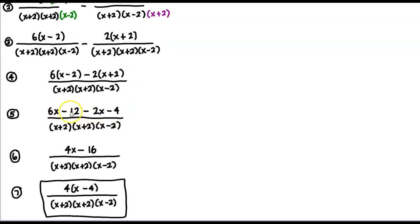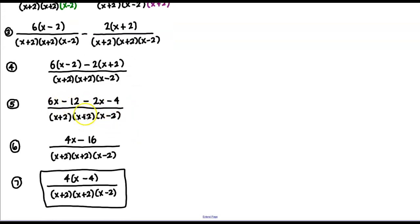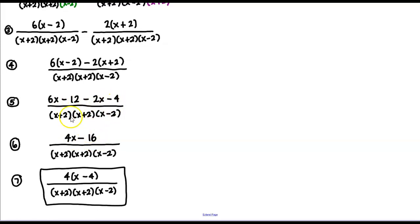Now we combine like terms: 6x minus 2x gives 4x, and minus 12 minus 4 gives minus 16, keeping the same denominator. In step 6, we have one fraction. We check the numerator for factors — we can factor out 4, leaving x minus 4. There's nothing to cancel, so we leave it in factored form. Step 7 is the final result: 4 times x minus 4, all over x plus 2 times x plus 2 times x minus 2.